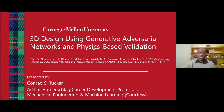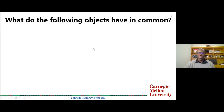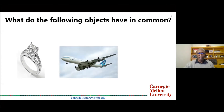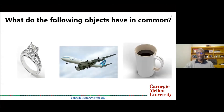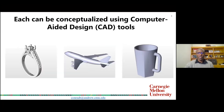I'm going to start with a question by showing three different objects and asking: what do they have in common? There's a wedding ring, there's an aircraft, there's a coffee mug. One of the aspects that unites these different seemingly different functional and aesthetic designs is that they can be conceptualized by existing CAD-based tools.